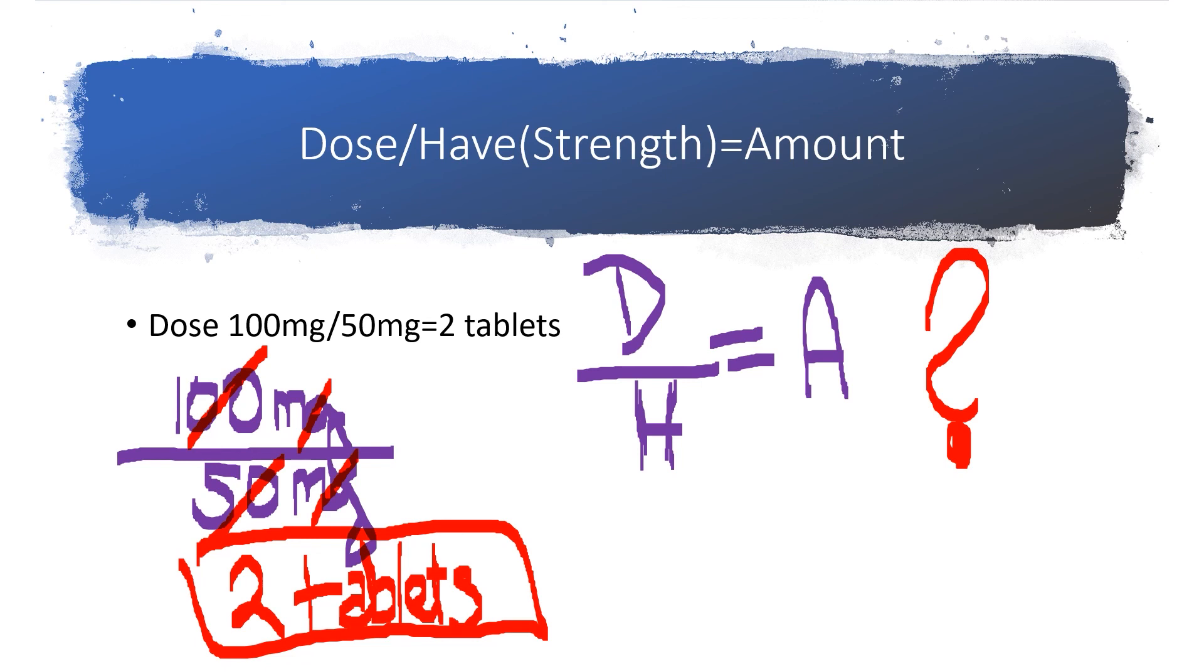It's going to be like the doctor ordered 400 milligrams, pharmacy sent you 200 milligram tabs. How many tabs do you give? Two. So it's not heavy duty calculus or statistics. They're going to be really simplified test questions as it pertains to this med math. All right.